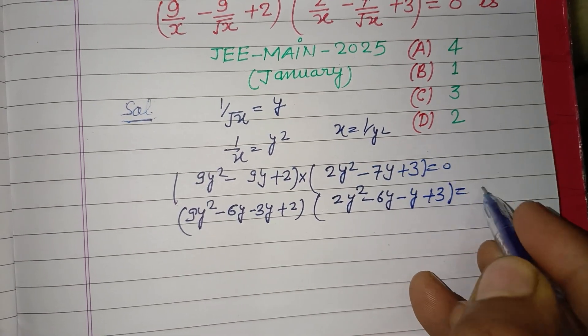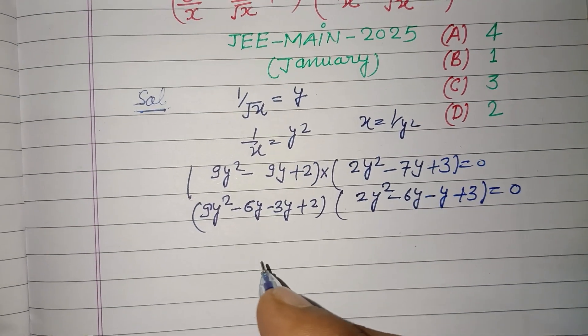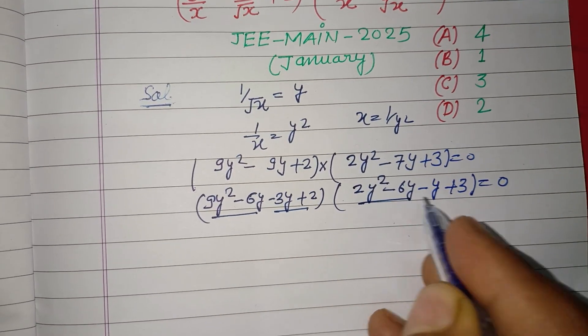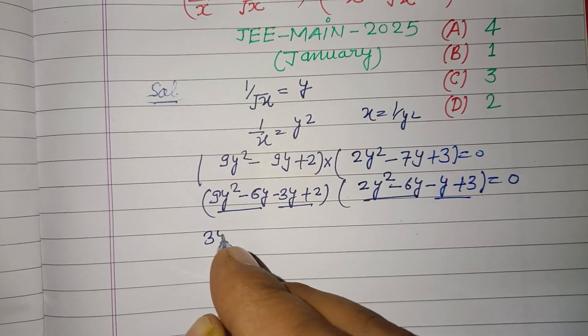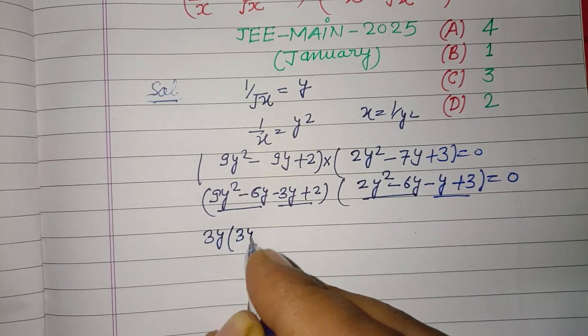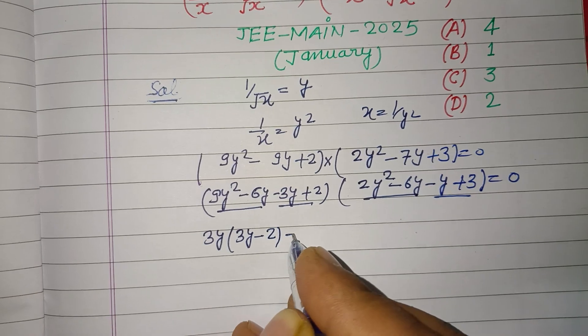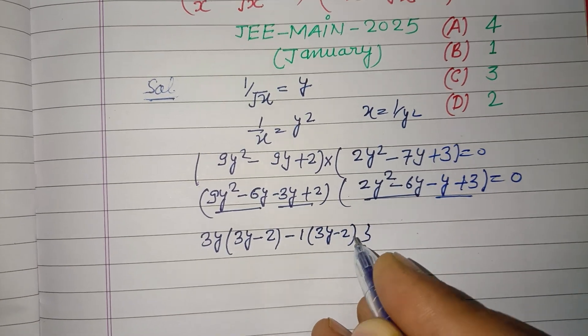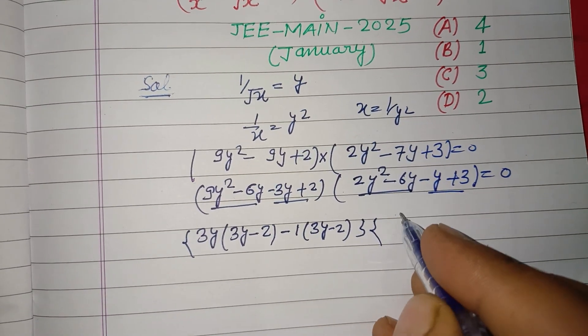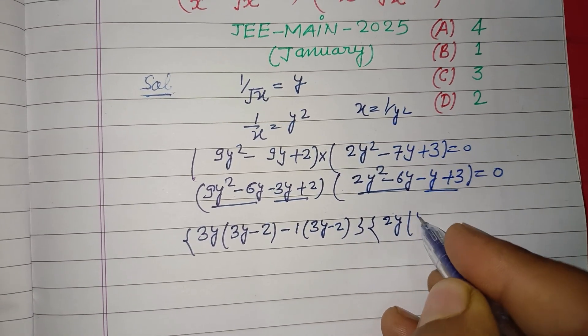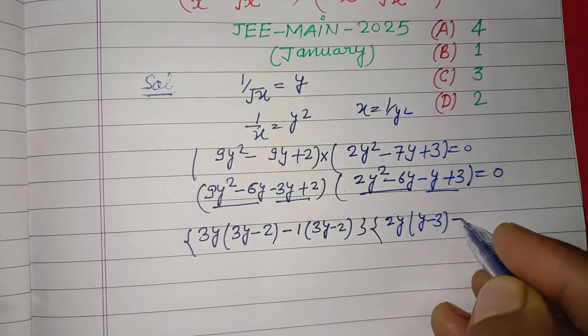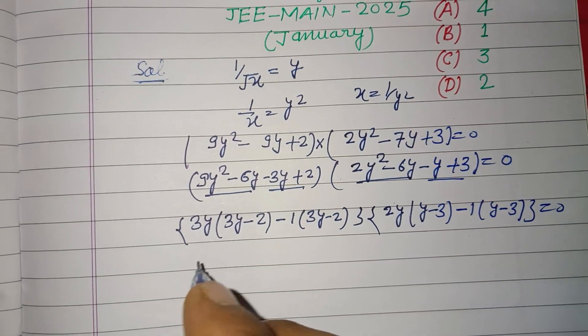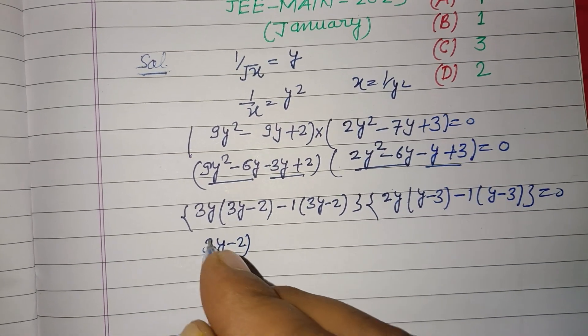Making groups and factorizing: 3y common gives 3y(3y - 2) - 1(3y - 2). And in this, 2y is common: 2y(y - 3) - 1(y - 3). So factors are (3y - 2)(3y - 1)(2y - 1)(y - 3) = 0.